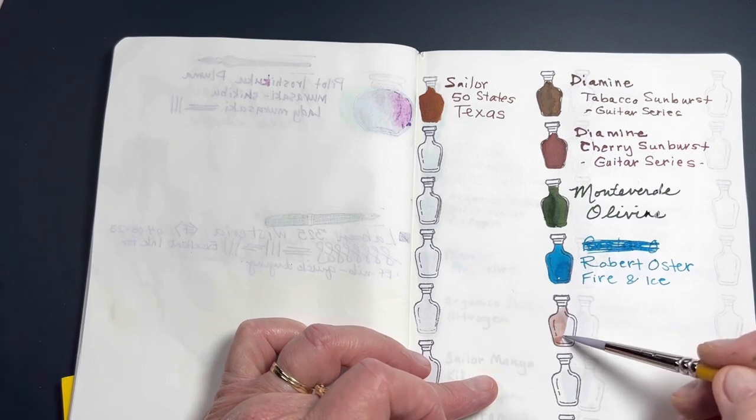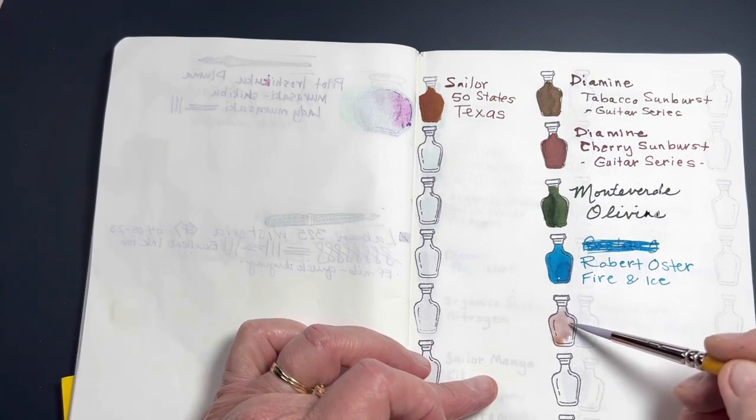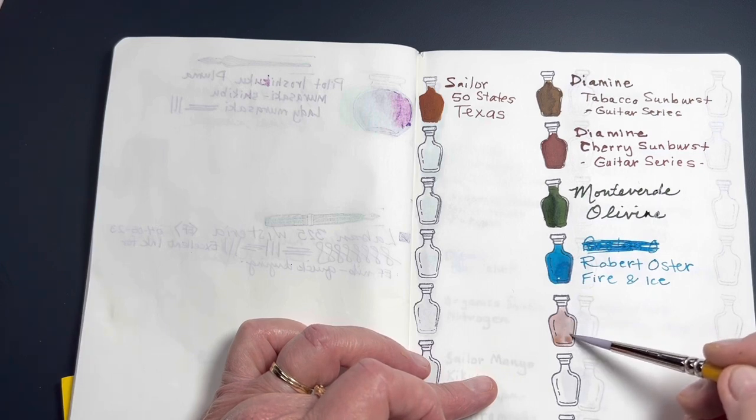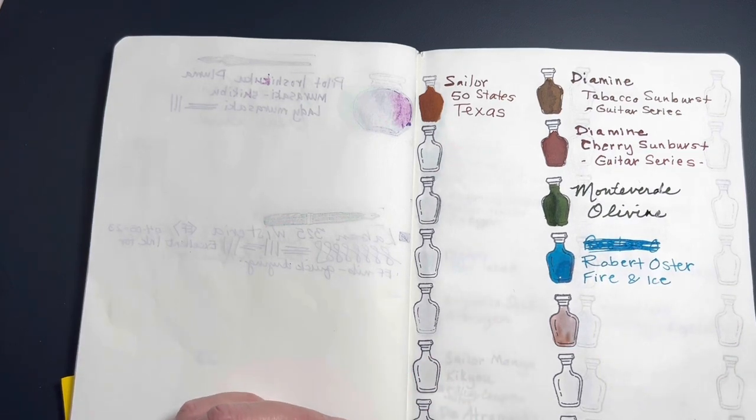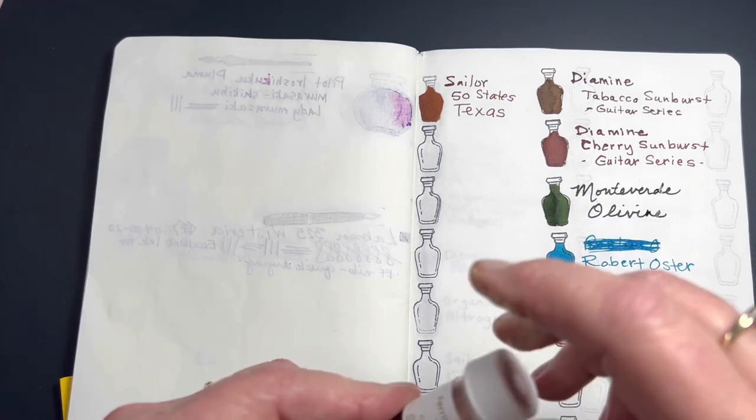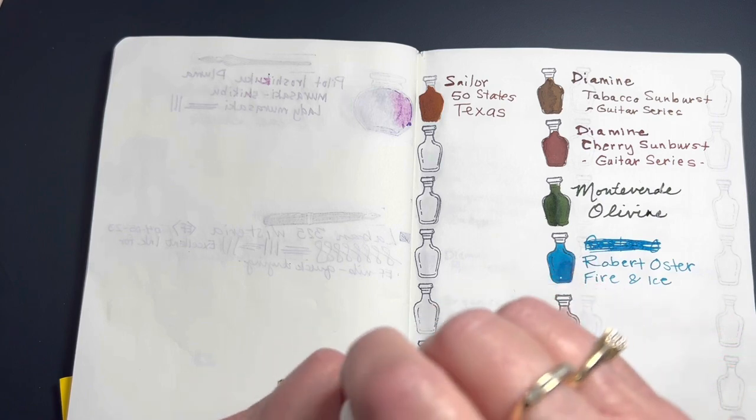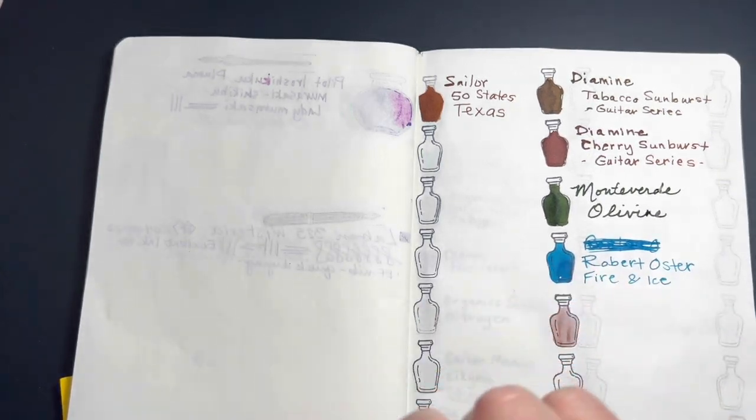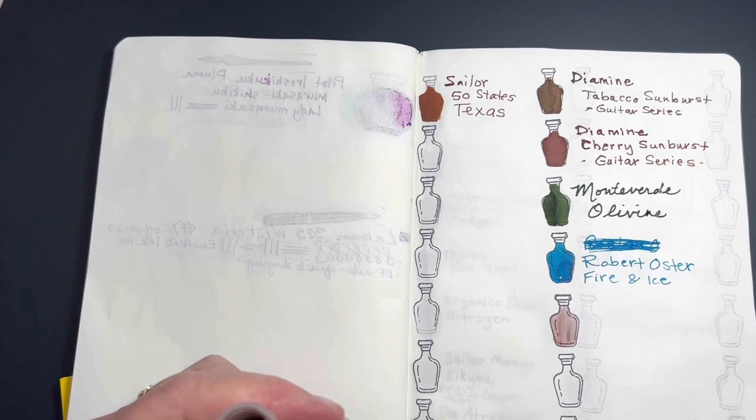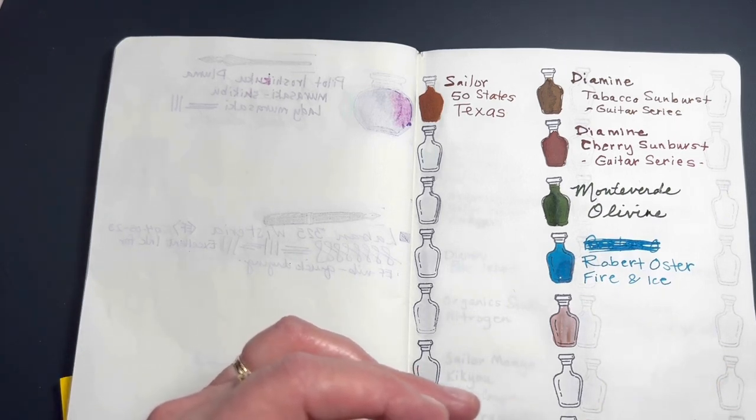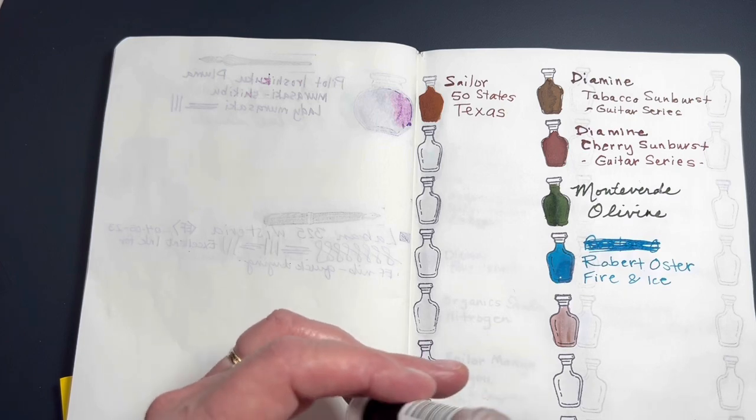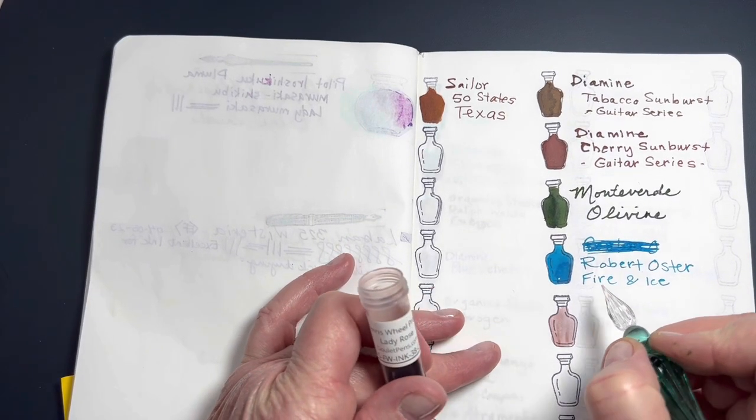This is Ferris Wheel Press Lady Rose. I don't have too many Ferris Wheel Press inks. Most of them, I've ordered one full bottle from them and it was the Adventurine, can't remember the name right offhand. But one thing I've noticed about the Ferris Wheel Press inks of the samples that I've experienced, I did it again, is it's very light. And when I say light, I don't really mean in color. I just mean in saturation.